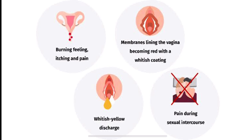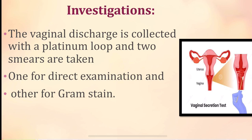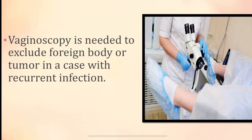For investigations, vaginal discharge is collected with a platinum loop and two smears are taken. One smear is used for direct examination, while the other is used for Gram staining to culture bacteria, fungi, or the causative organism such as gonococcus. Vaginoscopy is needed to exclude a foreign body or tumor in cases of recurrent infection.